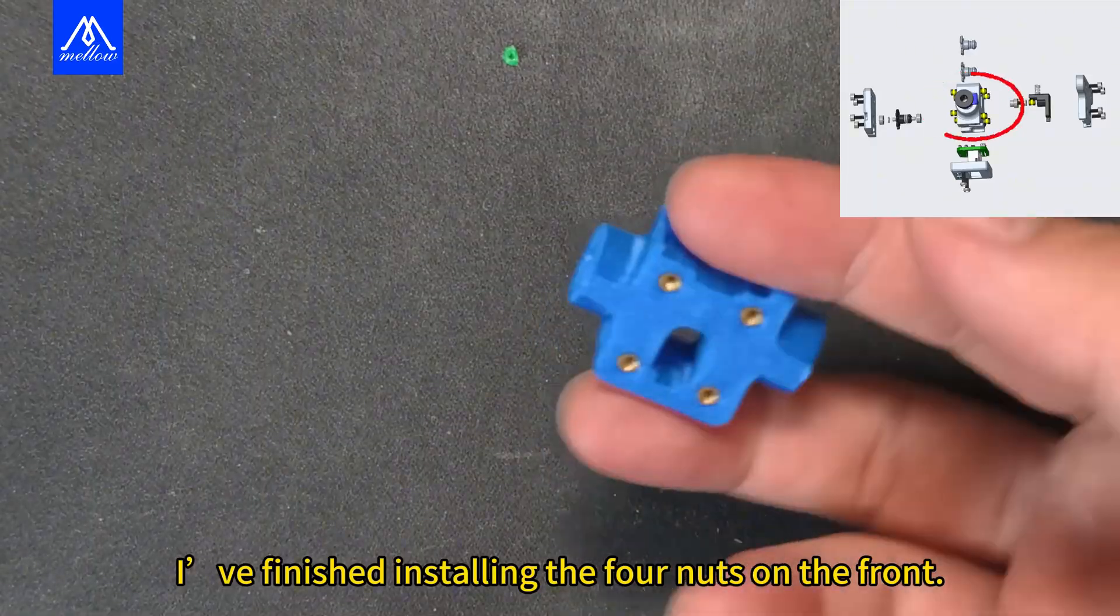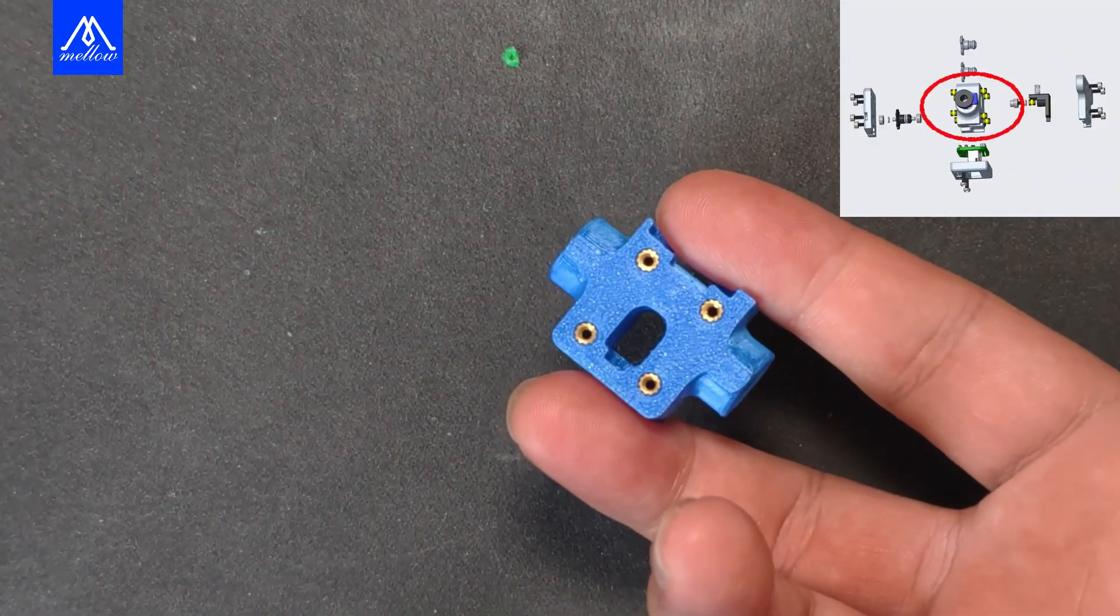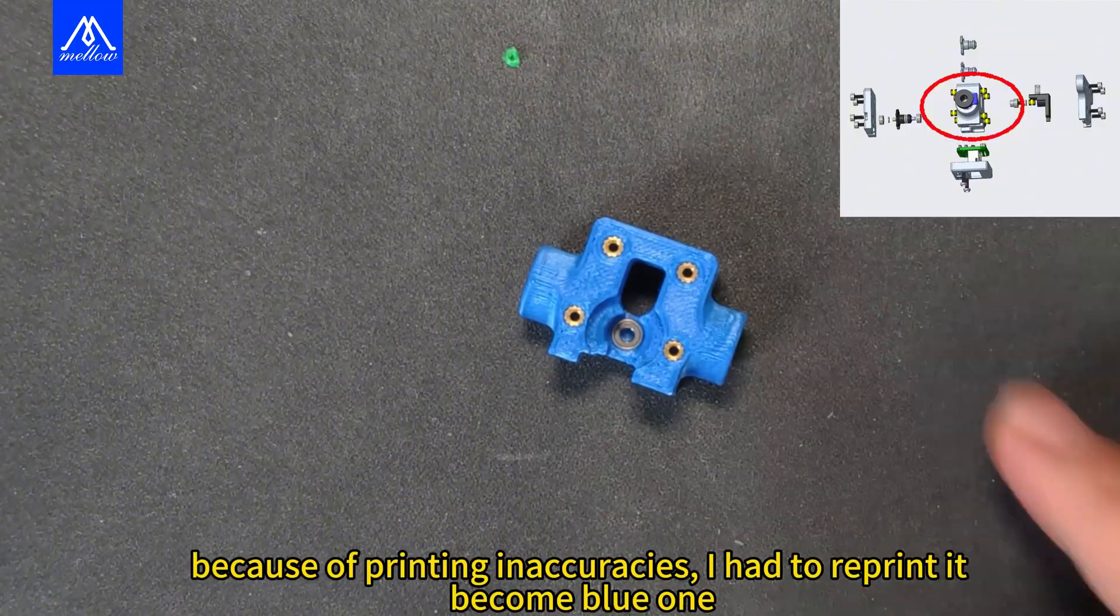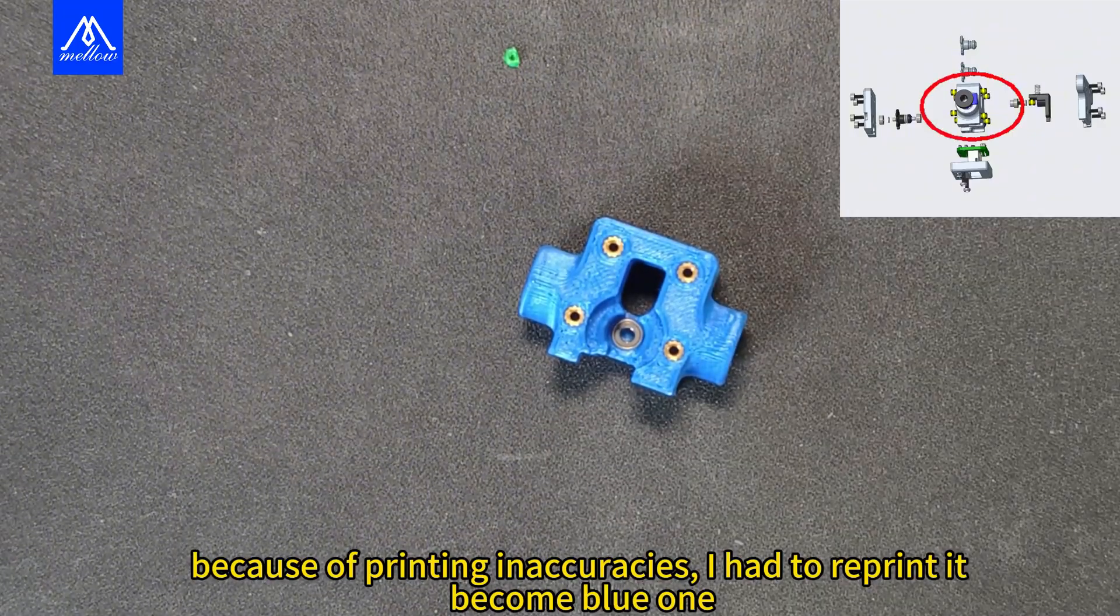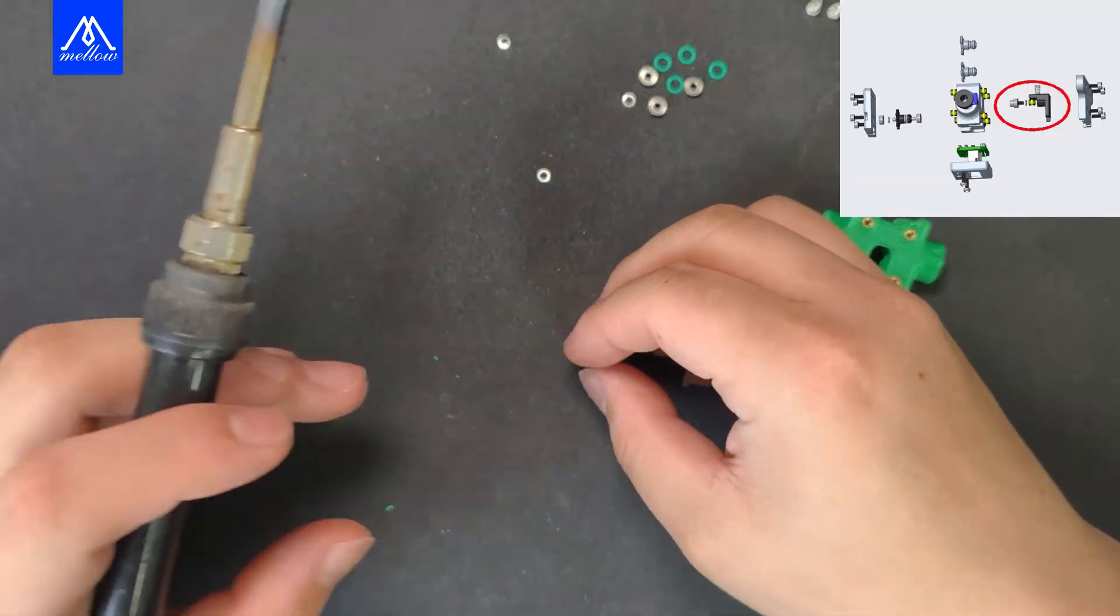I finished installing the four nuts on the front. This is what the nuts installed looks like. Because of printing inaccuracies, I had to reprint it as a blue one and then heat set it.